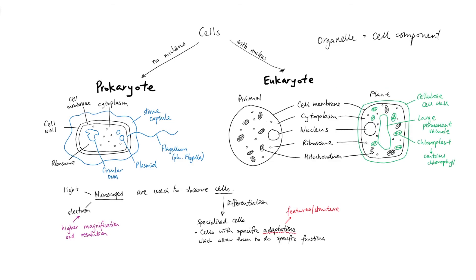To summarize: cells are the basic unit of life, and there are mainly two types — prokaryotic cells, which don't have a nucleus, and eukaryotic cells, which do. Eukaryotic cells include animal and plant cells, which have different combinations of organelles. We also covered microscopes — light and electron — used to observe cells, with electron microscopes having higher magnification and resolution. Finally, specialized cells have specific adaptations for very specific functions, so make sure you study the different examples of specialized cells.